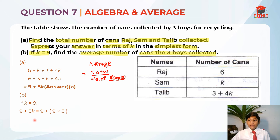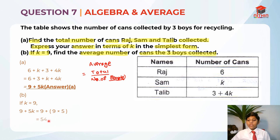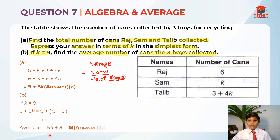We have 9 plus 5K, and we need to substitute K equals 9. So 5K is equal to 5 times 9, which is 45. So the total is 9 plus 45, which equals 54. In order to find the average, we take 54 divided by 3 people, which is equal to 18.